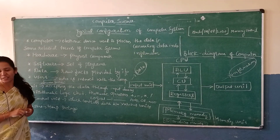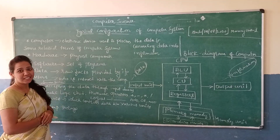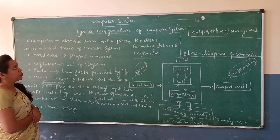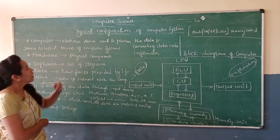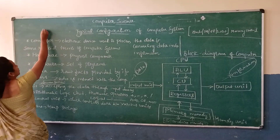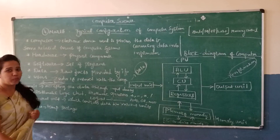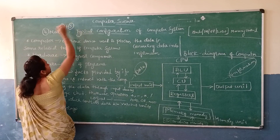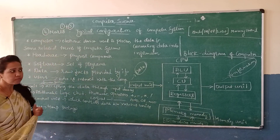Hi students, very good morning. Today we are going to start our second year computer science. Here in computational science second year, the first chapter is 'Typical Configuration of Computer System.' For this chapter, there will be a total of 4 marks — 1 mark plus 3 marks.